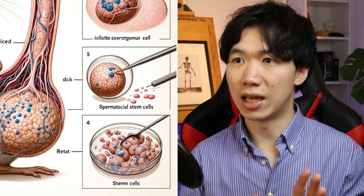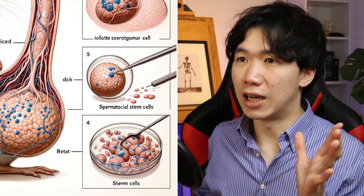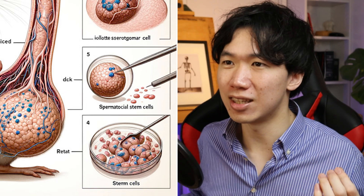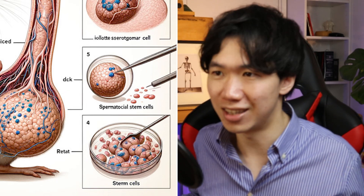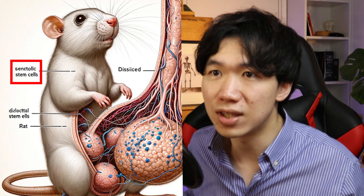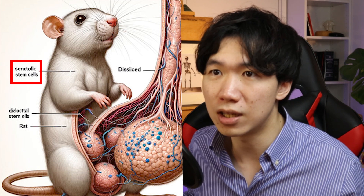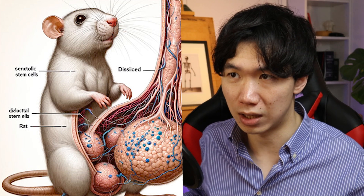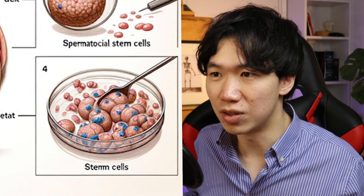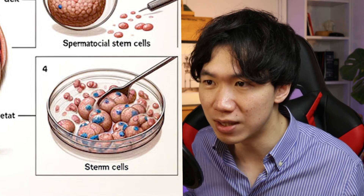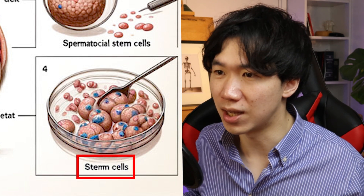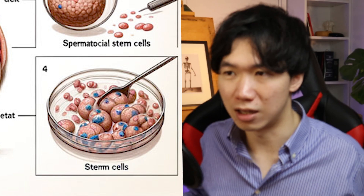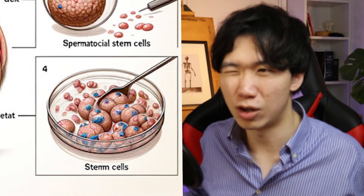Let's look at the labels. Why do they write 'dick' right here? What is 'dick'? This is not any type of language. Is this English? And what is this 'sectolic stem cell' on the shoulder? This is definitely incorrect. This spoon is scooping some stem cells I guess — stem cells with two M's. They look more like your leftover cereal.